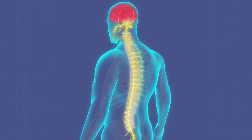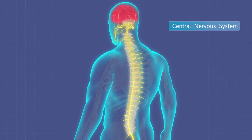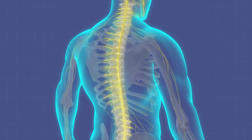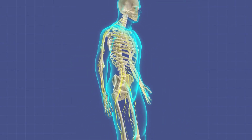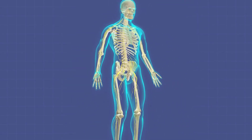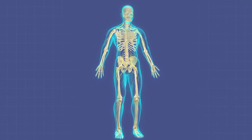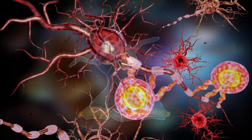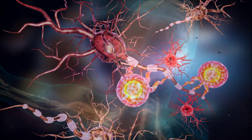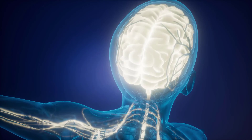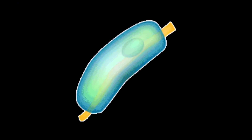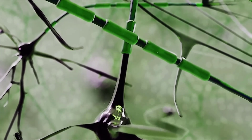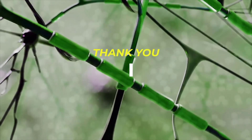The blood-brain barrier is a highly selectively permeable membrane that allows only very few substances to enter from the bloodstream to the cerebral spinal fluid which surrounds the spinal cord and brain. The oligodendrocytes produce the myelin sheath for neurons located in the central nervous system, which includes the brain and spinal cord. Similarly, the Schwann cells produce the myelin sheath on neurons located in the peripheral nervous system.